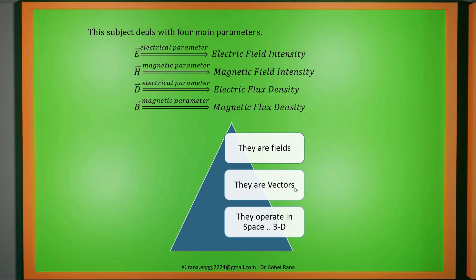Now, what is a field? The simple meaning of field is any place where a number of forces are working together for a particular task. For example, if you go to a football or cricket field, you are going to the playground where forces work together to win a match. In a classroom, the teacher applies force to share knowledge and students apply force to understand it — that is the field of knowledge. So electromagnetic field means electric field and magnetic field components working together for one particular task.